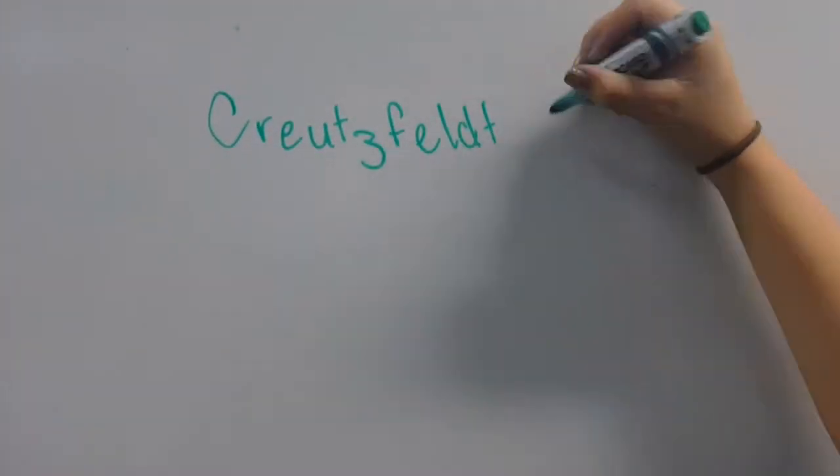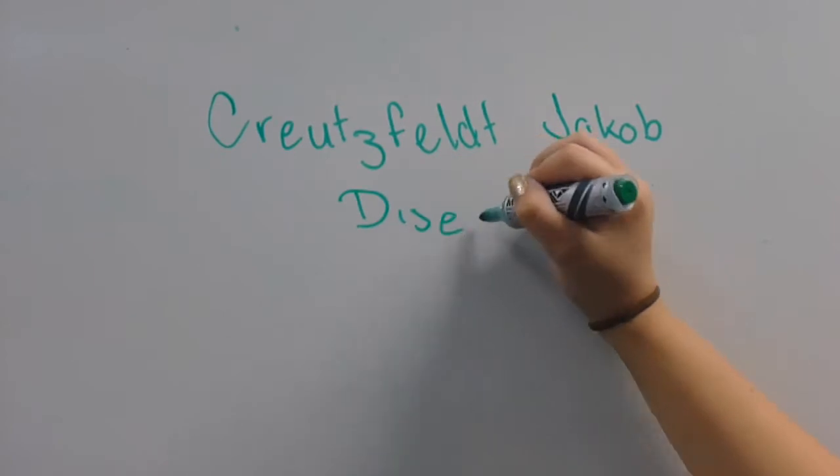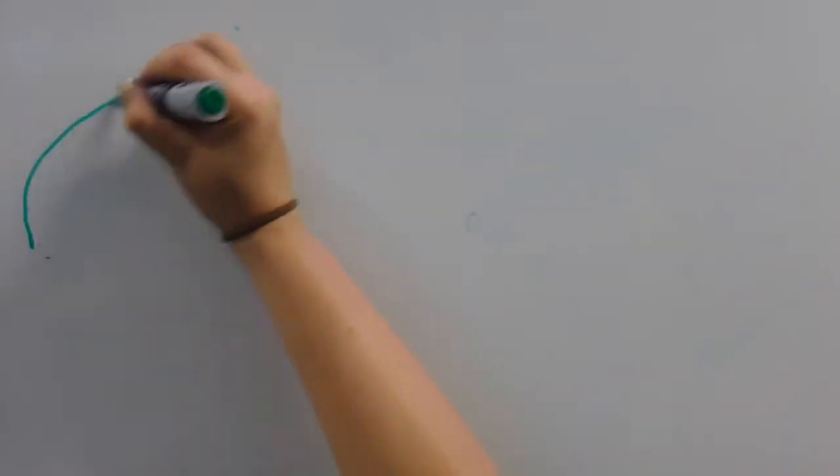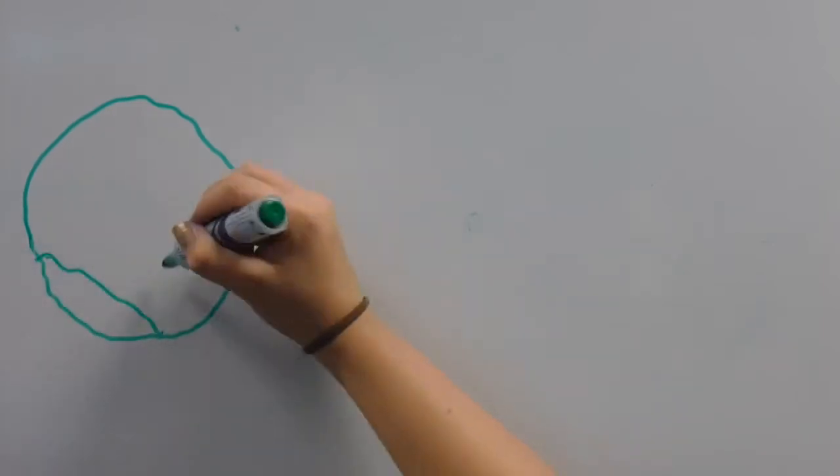Creutzfeldt-Jakob disease is a rare and fatal neurodegenerative disorder theorized to be caused by an atypical protein isoform of a cellular glycoprotein known as the prion protein.